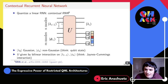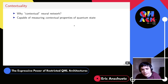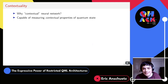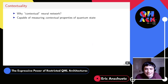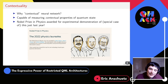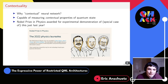We call this a contextual RNN because it's capable of measuring contextual properties of the quantum state lambda_i. Quantum contextuality is essentially the statement that when doing quantum measurements, you're not merely revealing pre-existing classical values for quantum observables. Last year, the Nobel Prize in Physics was awarded for experimental demonstrations of special cases of this fact — they were looking at non-locality, which is a special case of quantum contextuality.